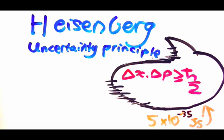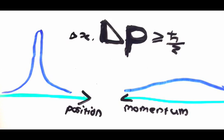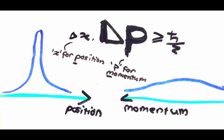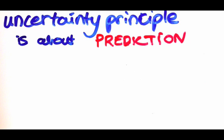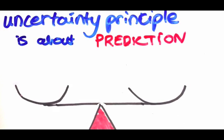Imagine we manage to get the particle into a state like this. Now we're pretty sure about where the particle will end up. However, as a result, we don't know very well what momentum we'll get if we measure it. So you see, the uncertainty principle is all about prediction. It restricts how well we can predict the particle's momentum and position at the same time.